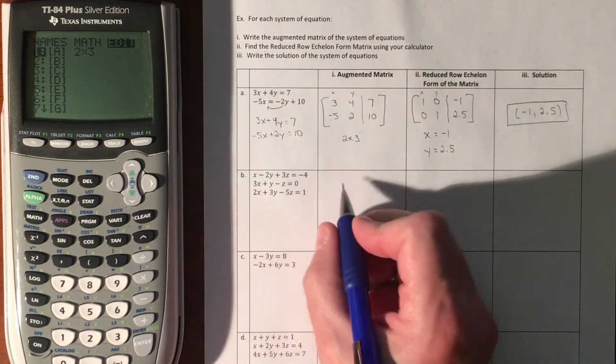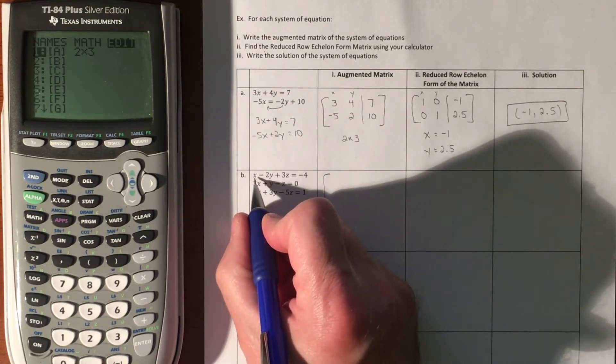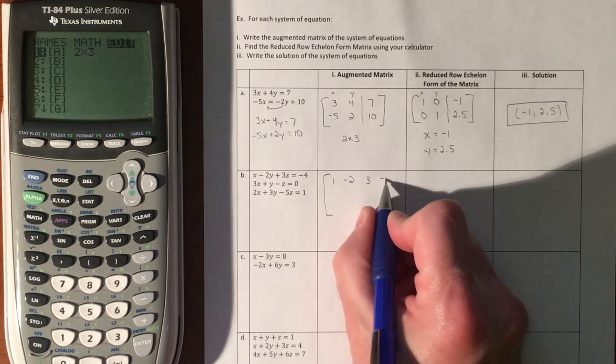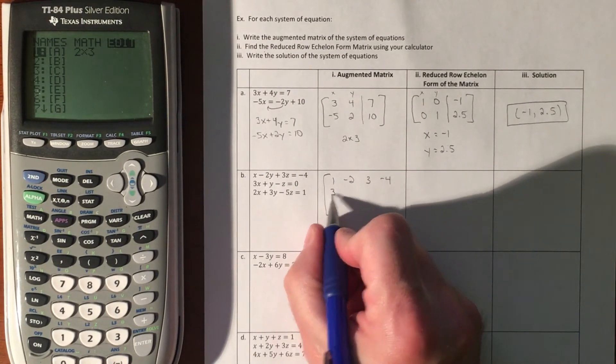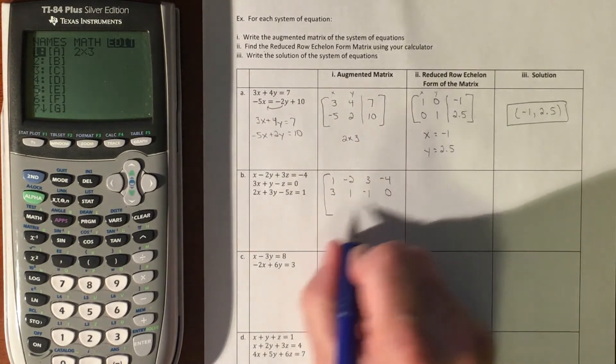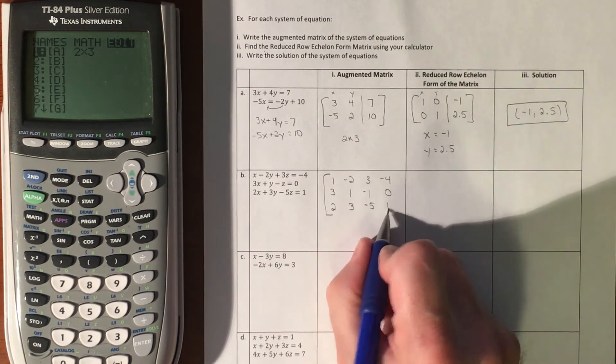All the X's, Y's, Z's are lined up, looks great. I'm going to write it in the augmented matrix: 1, negative 2, 3, negative 4, 3, 1, negative 1, 0, 2, 3, negative 5, 1.